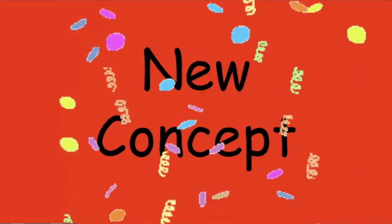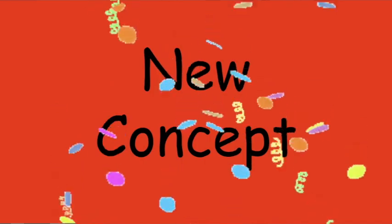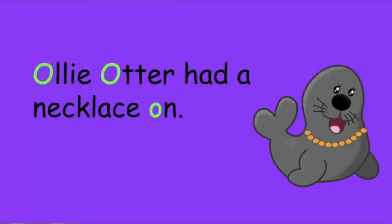We're starting a new concept with the letter O and the short vowel sound, O. Think about this sentence: 'Ollie otter had a necklace on.' And another sentence: 'Augie octopus ogles olives.' And 'Hop on top.' Some of those words you heard at the beginning and some in the middle of the word. Since this is a vowel sound, many of the sounds we're going to associate with it will be the middle sound in a CVC word — a consonant, vowel, consonant word.